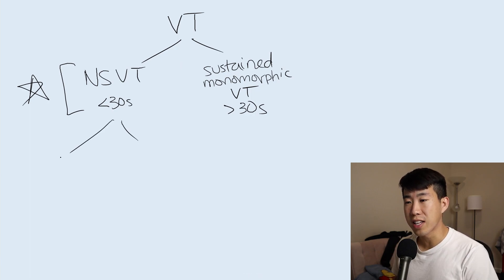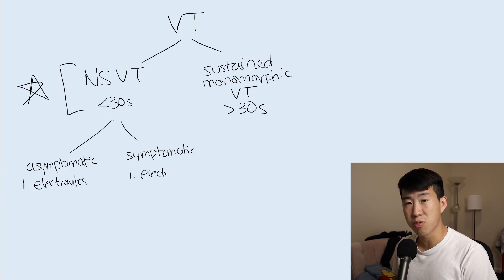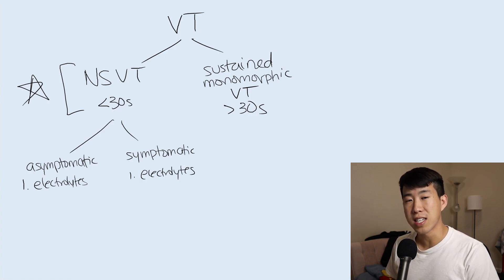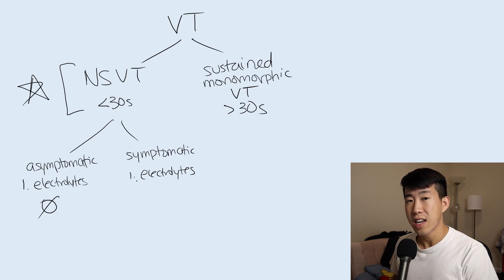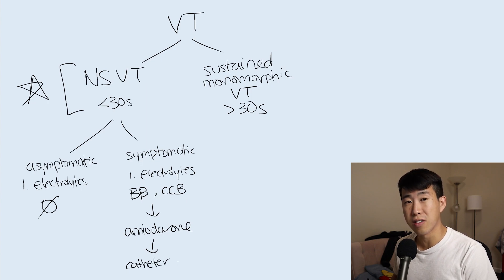For non-sustained VTAC, you can classify patients as asymptomatic or symptomatic. In both cases, check electrolytes, because replacing out-of-range electrolytes significantly diminishes the risk of further VTAC runs. If asymptomatic, you don't have to do anything. If symptomatic, initiate a beta blocker or calcium channel blocker. If they continue to be refractory, consider amiodarone, and if still refractory, you may pursue catheter ablation.